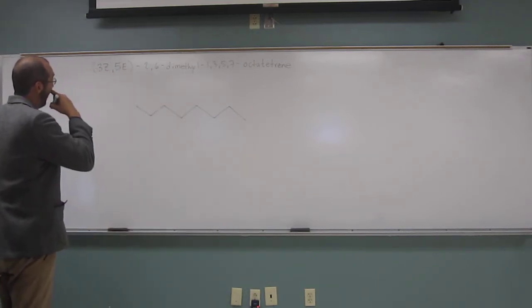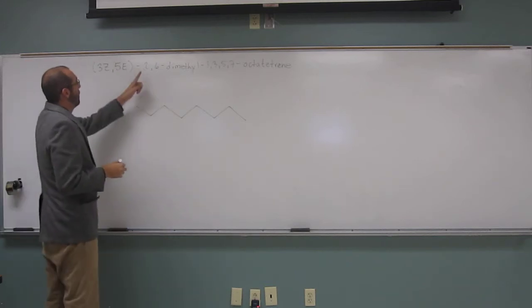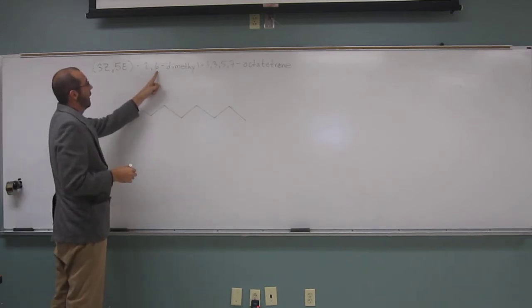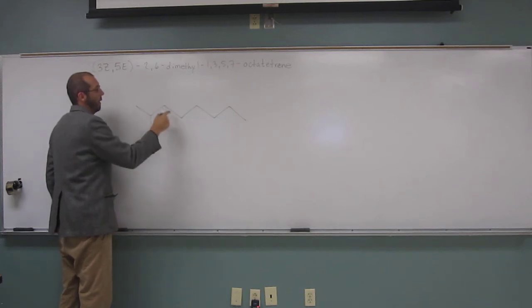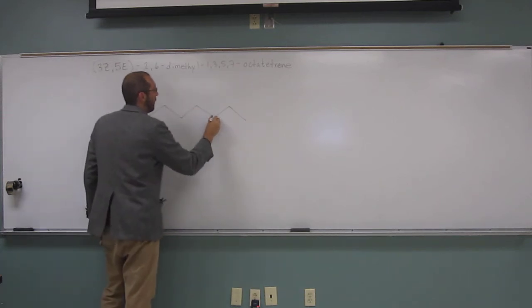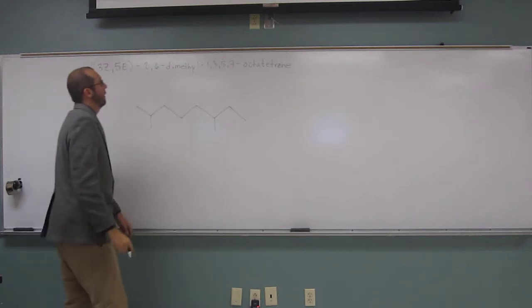And it says we've got at places two and six, we've got two methyls. So one, two, three, four, five, six. That's your dimethyl.